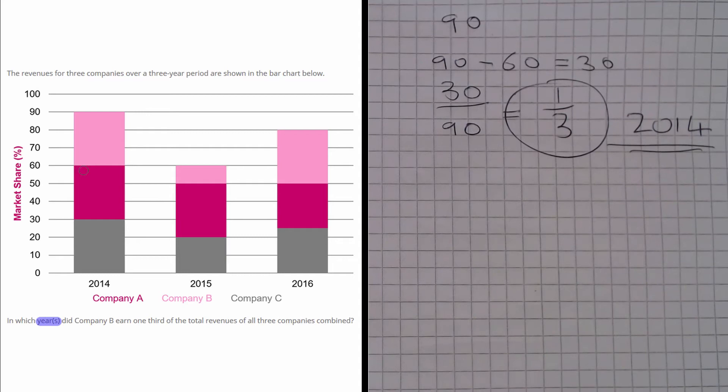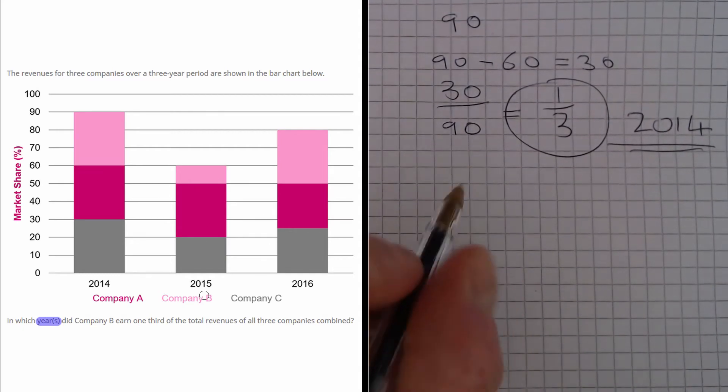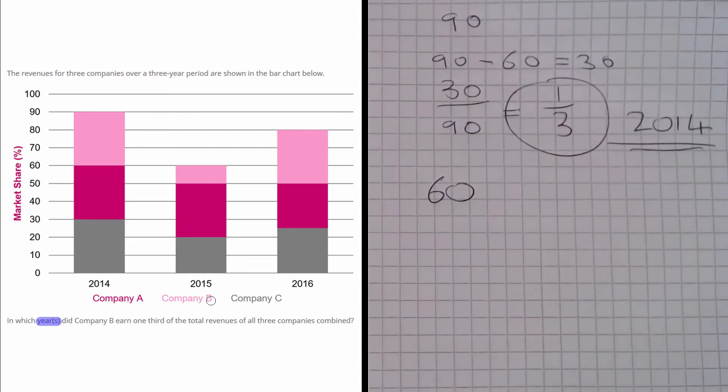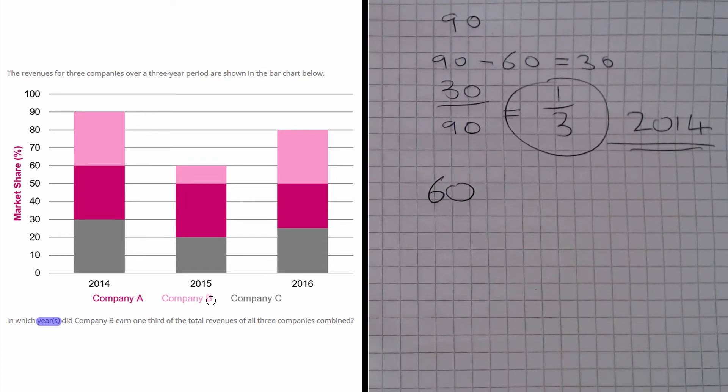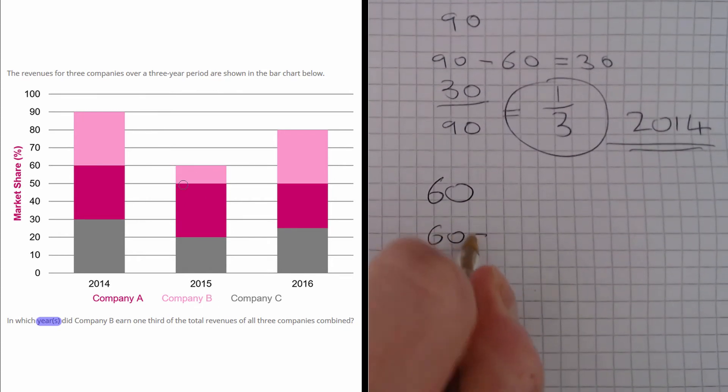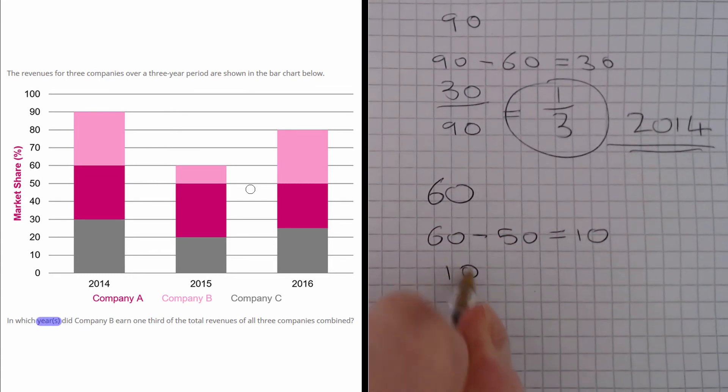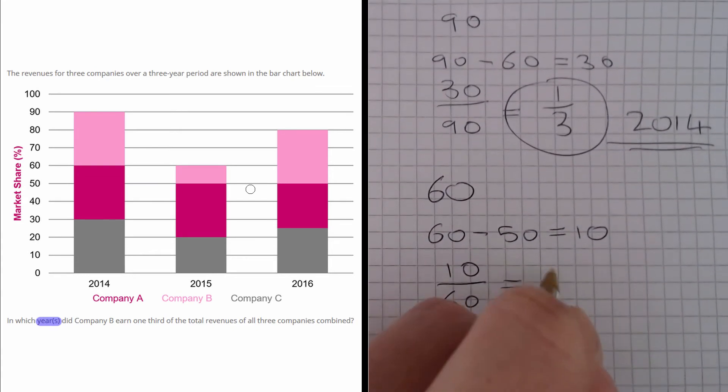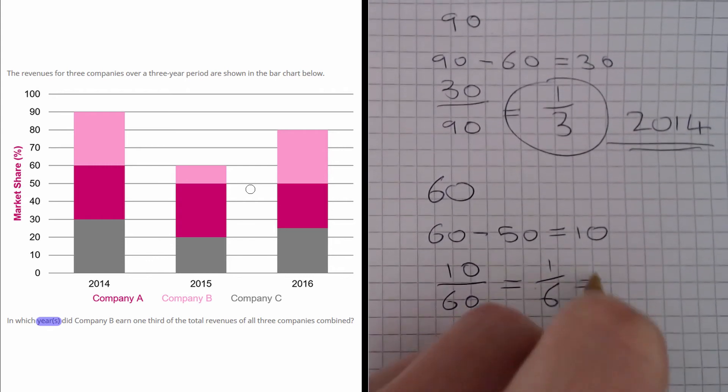Now let's have a look at 2015. So again the total height is 60, but Company B has between 60 and 50. So we have 10 out of 60, which is a sixth, which does not equal a third.